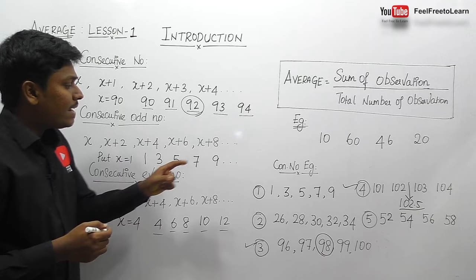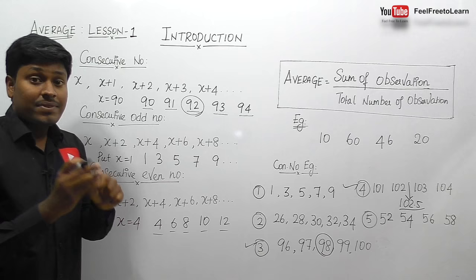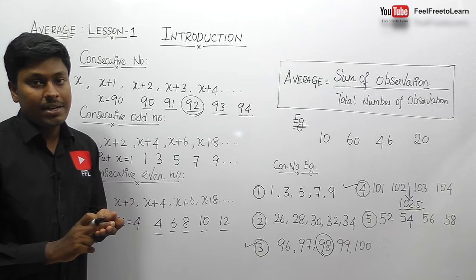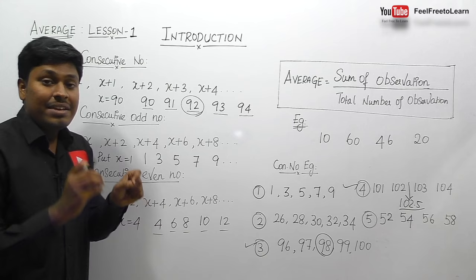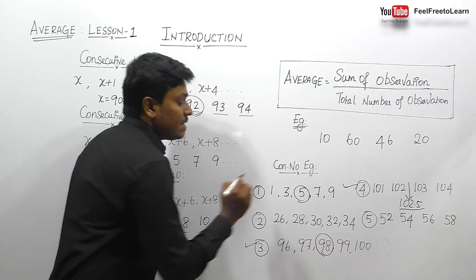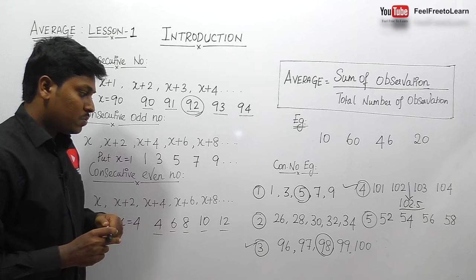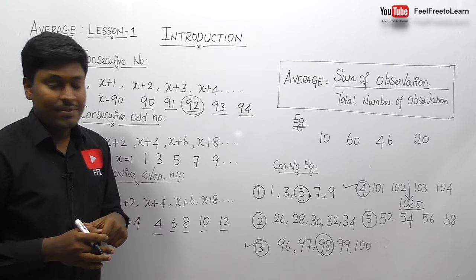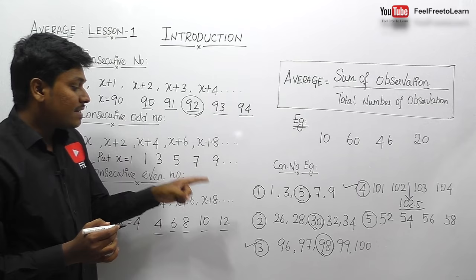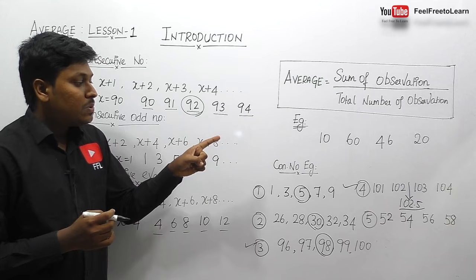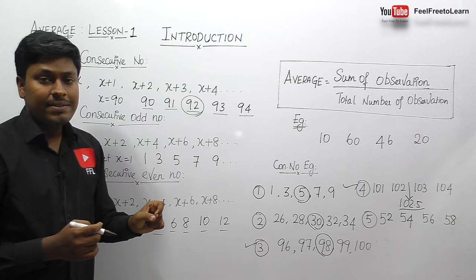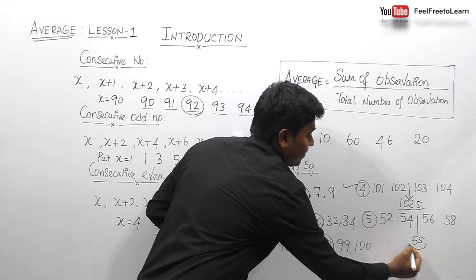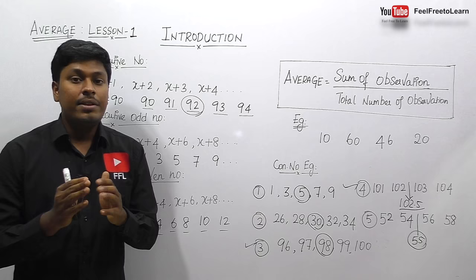For example 1: 1, 3, 5, 7, 9 — we check and confirm it is consecutive odd numbers. The center number is the average, so the answer is 5. For example 2: 26, 28, 30, 32, 34 — consecutive even numbers, center number is 30. For example 5: 52, 54, 56, 58 — consecutive even numbers, center number is 55, so the average is 55.